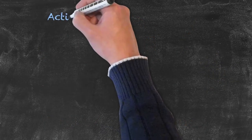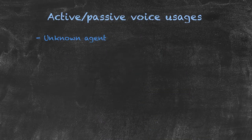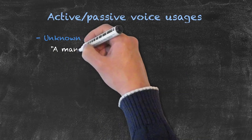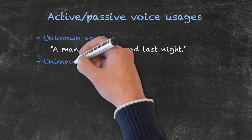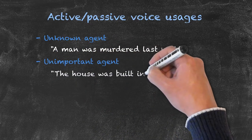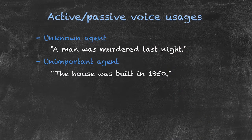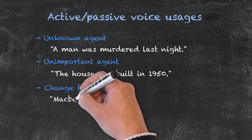We use the passive voice for the following reasons. When the agent is unknown: 'A man was murdered last night' — we don't know who murdered the man. When the agent is unimportant: 'The house was built in 1950' — we don't really care who built the house, and it doesn't particularly matter.